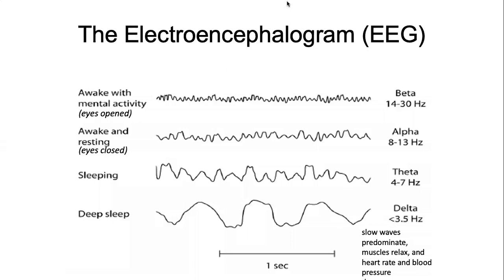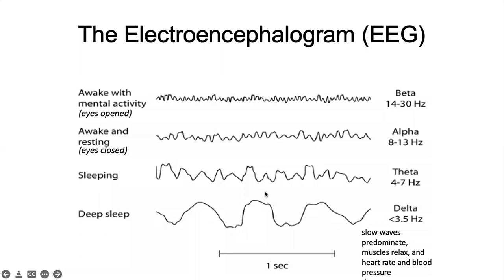These are the different waves seen in an EEG. Just as in the ECG you have PQRST waves, in the EEG you have beta, alpha, theta, and delta waves. Beta waves are seen when the patient is awake with mental activity and eyes open. If you close your eyes but are still awake, you have alpha waves. When you go to sleep, your brain slows down and exhibits theta waves. In very deep sleep, the brain slows further and this appears as delta waves.